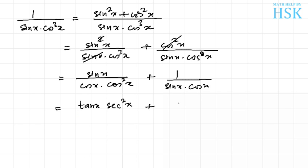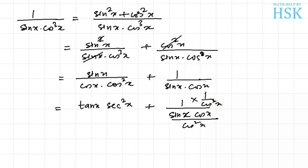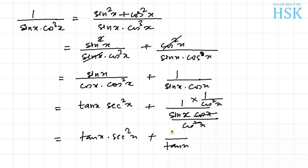For the second term, I take sin x into cos x and divide it by cos square x — multiplying by 1 upon cos square x. Dividing numerator and denominator by cos square x gives tan x into sec square x in the numerator, and tan x in the denominator with sec square x. So the full expression becomes tan x into sec square x plus sec square x upon tan x.